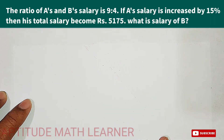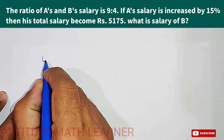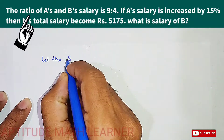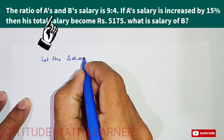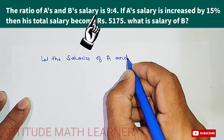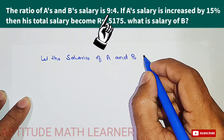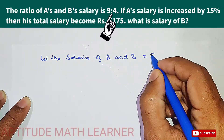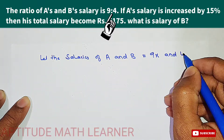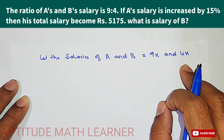The condition given in the question is we are having the ratios of A's and B's salary. So the first thing we have to do is let the salaries of A and B be 9x and 4x. So these are the ratios of their salary.